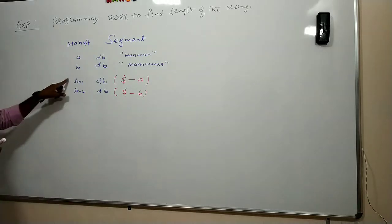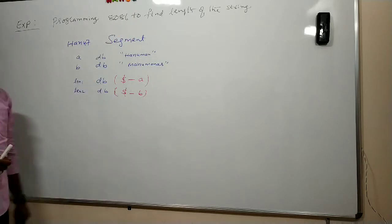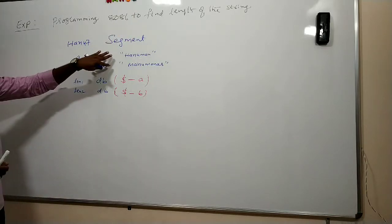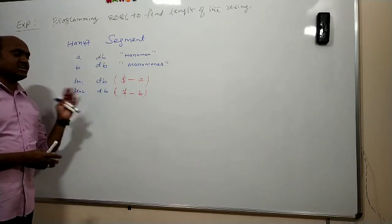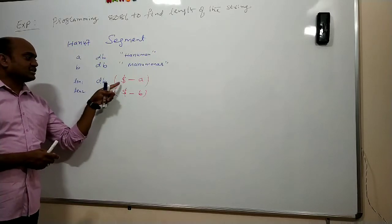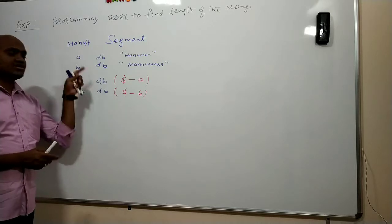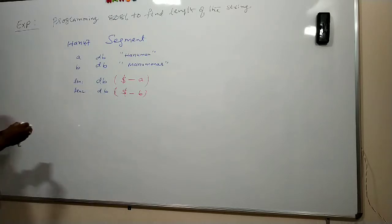So these two statements are getting the length of the string. Our program is to find out the length of the string. So I define my input in the data segment as usual like other programs. And in the data segment itself I am getting the output with the help of the command dollar minus a and dollar minus b. So let me close this segment.